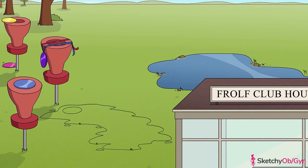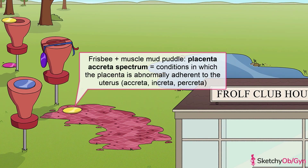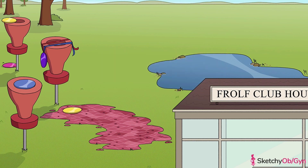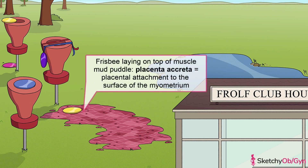Next up is the placenta accreta spectrum of diseases. This spectrum refers to conditions in which the placenta is abnormally adherent to the uterus — which is why this frisbee over here is lying on top of a mud patch made of muscle fibers. Unfortunately, rates of these diseases are rising, most likely in response to increasing C-section rates.